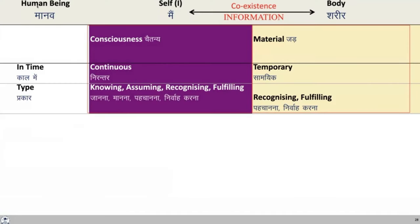Human being is coexistence of self and body. Self is the consciousness while the body is the material. Self is continuous while the body is temporary. It's not only the needs which are continuous or the activities which are continuous — the self is also continuous. The body is temporary, all of us know. But what is continuous, we need to observe through our direct observation. The body has only activities of recognizing and fulfilling, while the self has the activities of knowing, assuming, recognizing and fulfilling. So try to find it out for yourself — try to observe yourself different from the body, try to observe the interaction between the self and the body.